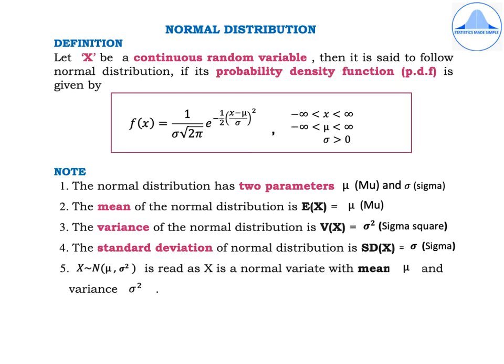When the random variable is discrete, we have what is called as the probability mass function or the PMF, which is denoted by P of x. We have seen that different discrete distributions have different PMFs. The normal distribution has a continuous random variable, and hence we will have what is called as the probability density function, denoted by small f of x.